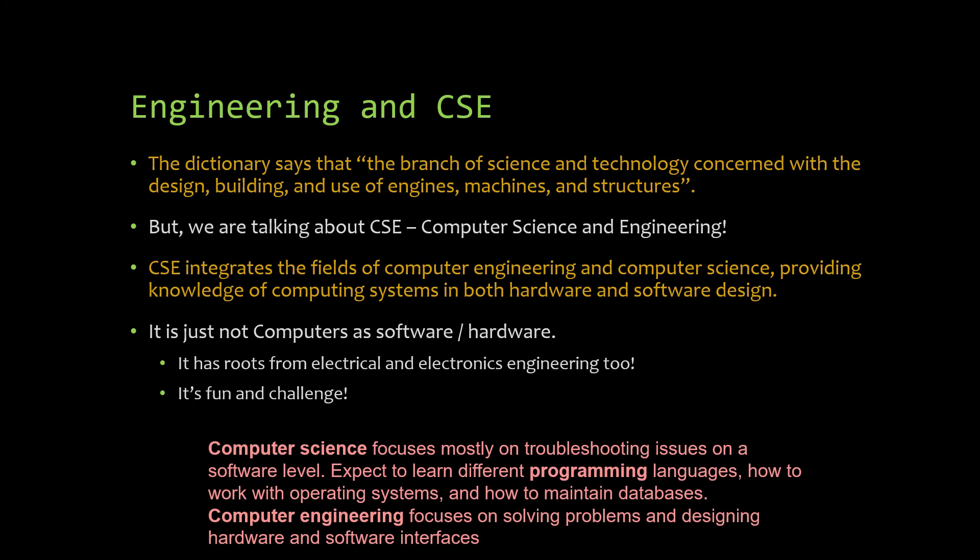What is engineering? Engineering is a branch of science and technology concerned with the design, building, and use of engines, machines, and structures. This traditional definition might look like it only applies to mechanical or automobile engineering, but it also fits computer science engineering — because engineering is all about making things simple: designing, building, architecting, and more.